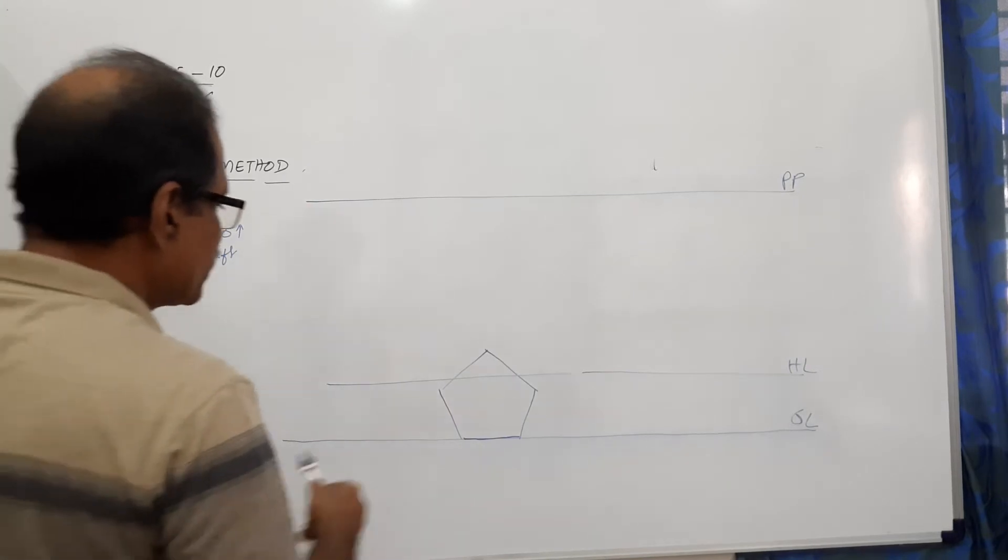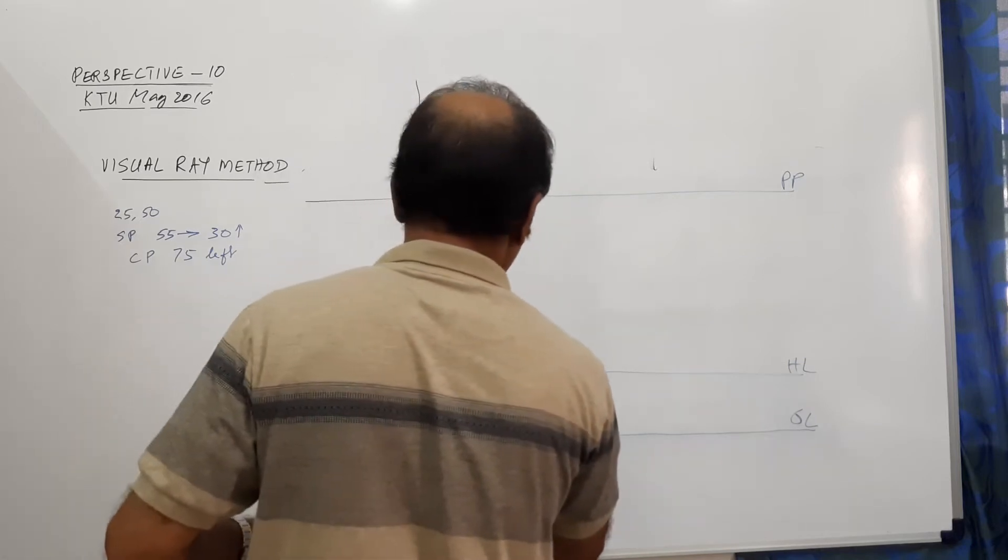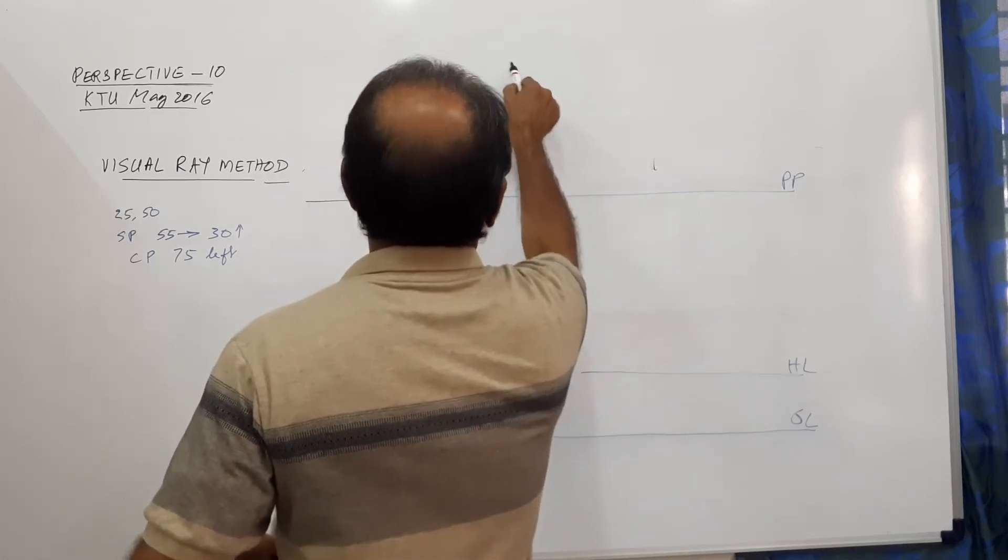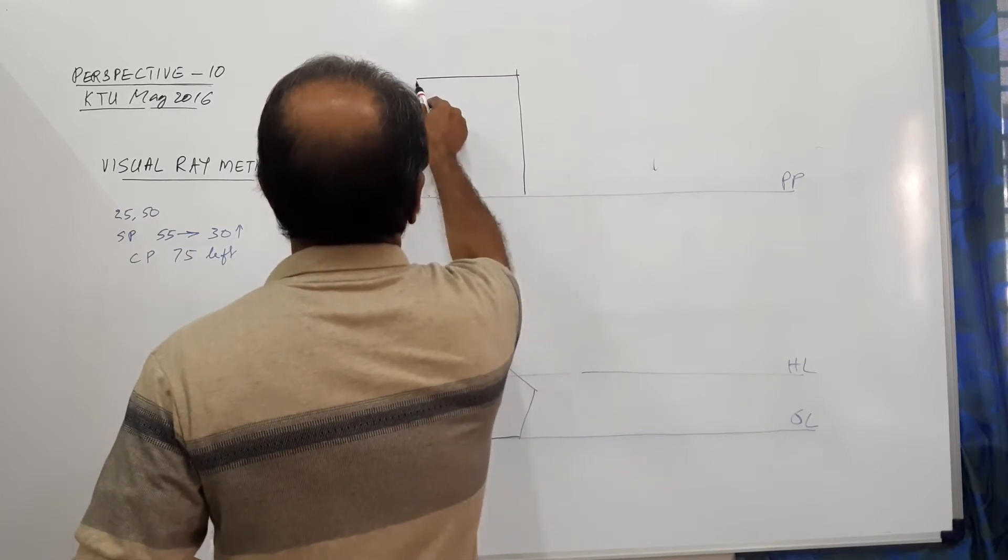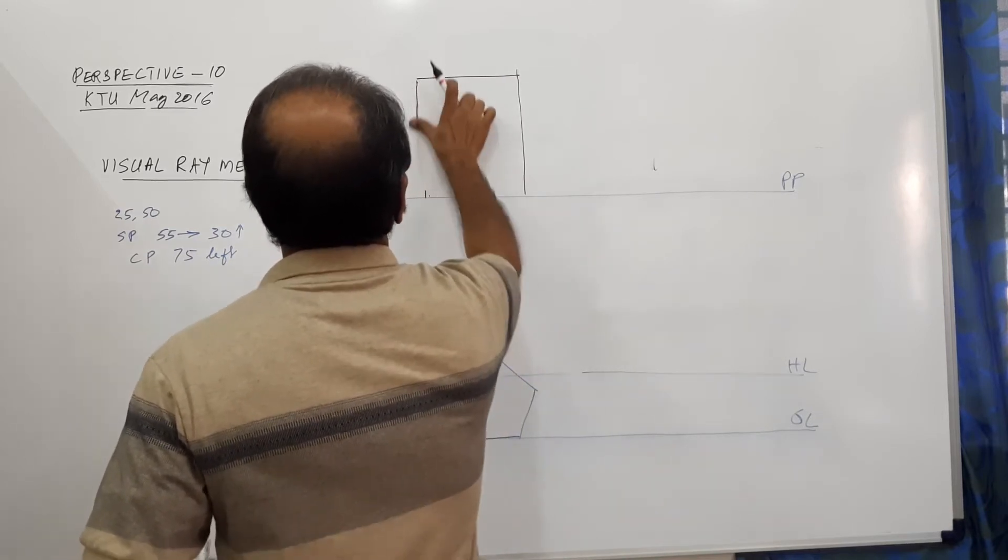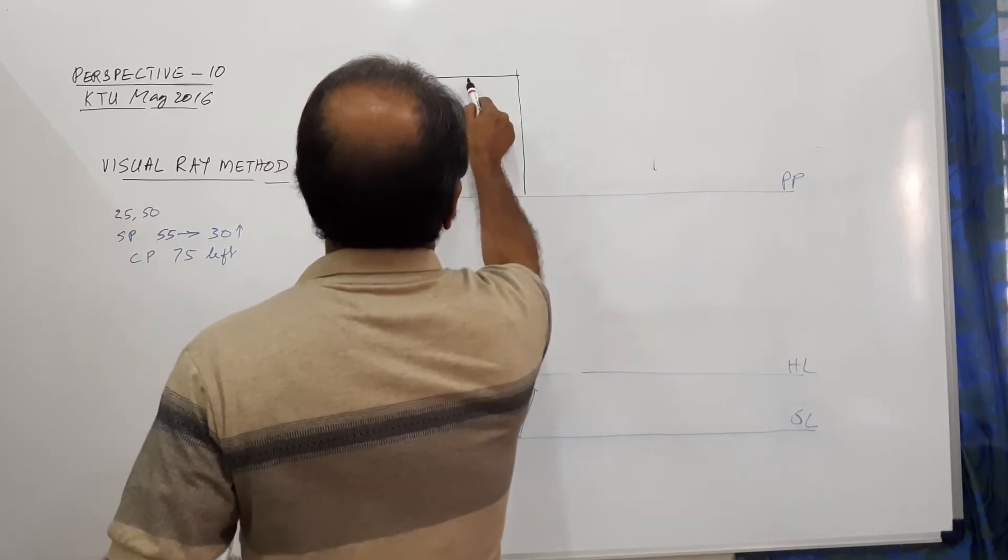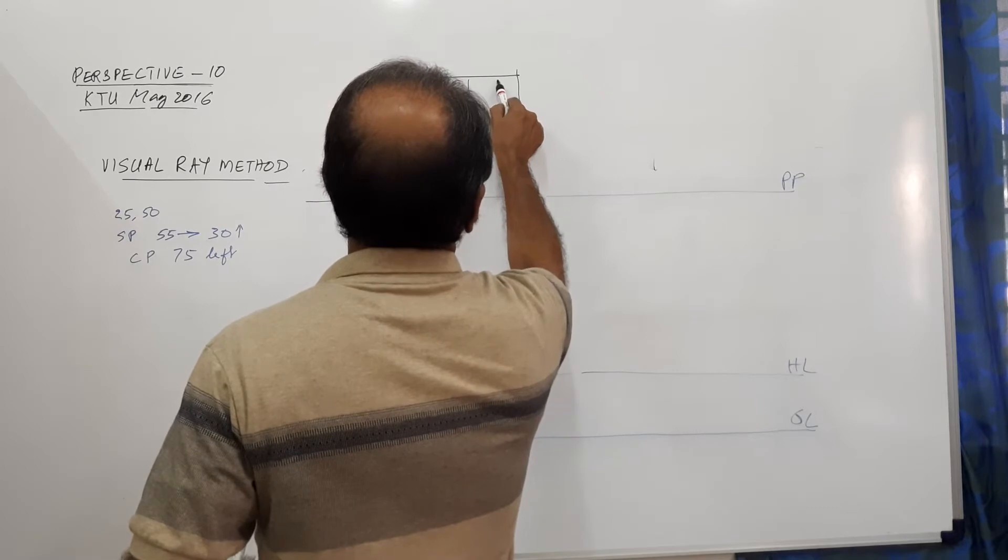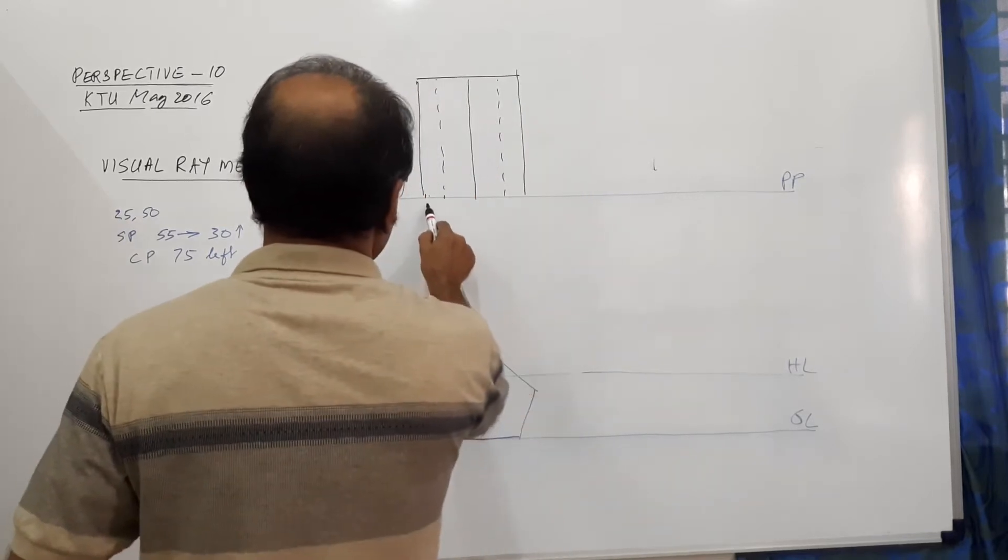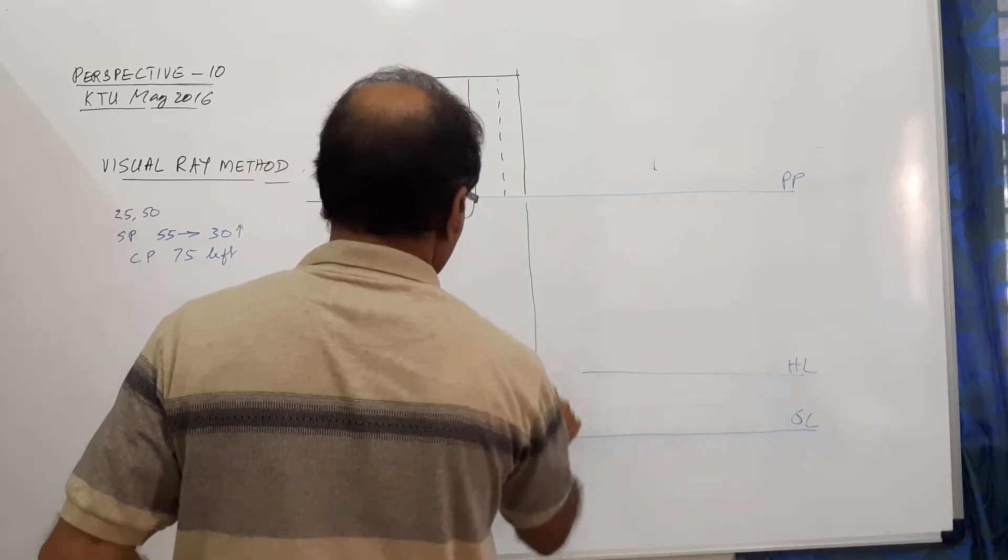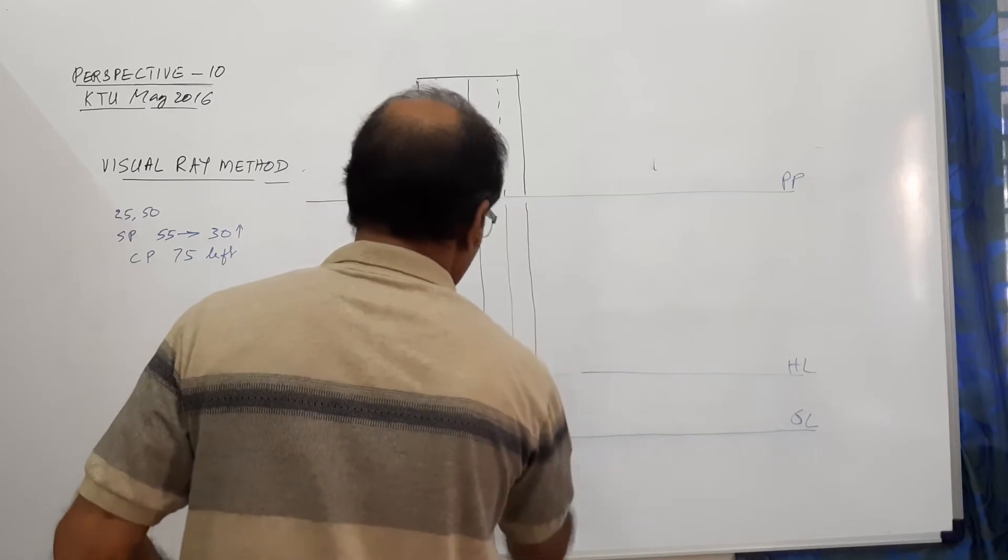Now, take this width and draw the plan. Draw the plan of the prism. Now, this is projected from this. I hope you understand.